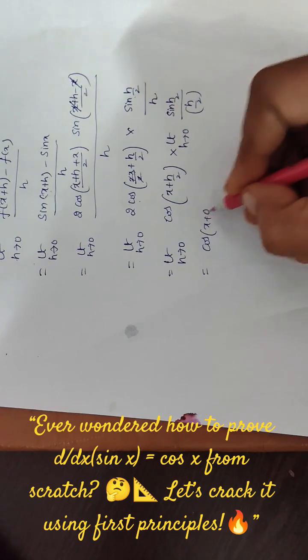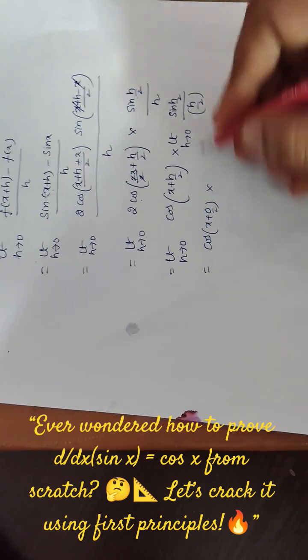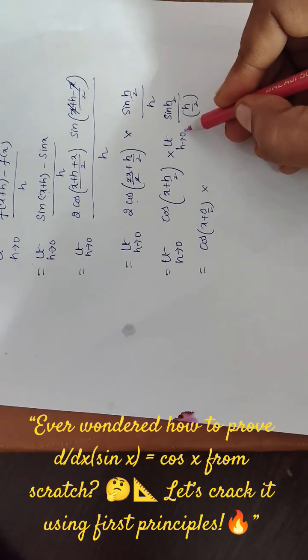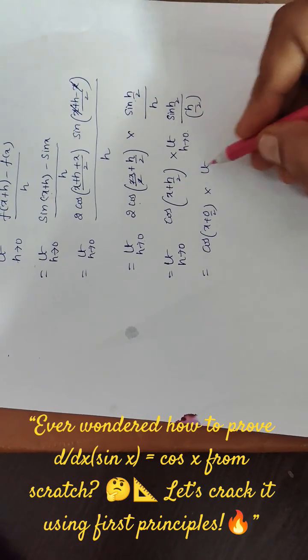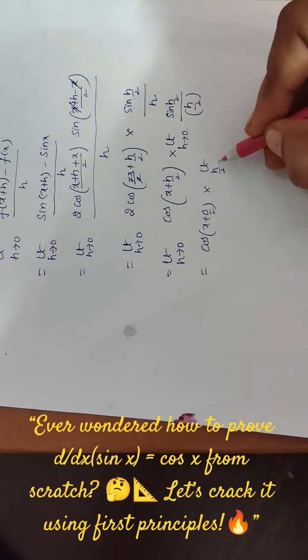So here, if you remove limits, you will get cos of x plus 0 by 2, into, and limit h tends to 0 is there. So here we can write as limit h by 2.